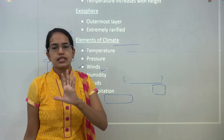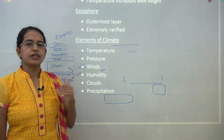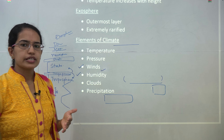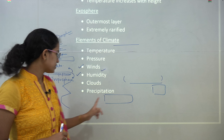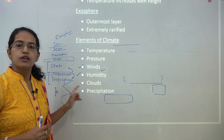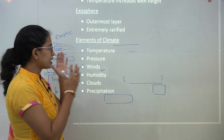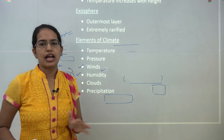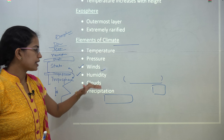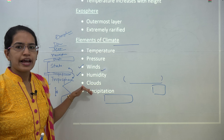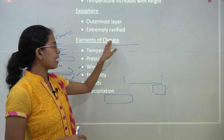There are certain elements present in the climate. Temperature and pressure changes in the atmosphere — temperature changes with the layers, as we already talked about. The major elements of climate include temperature, pressure, winds, humidity, cloud, and precipitation. We have already talked about this briefly in previous lectures.